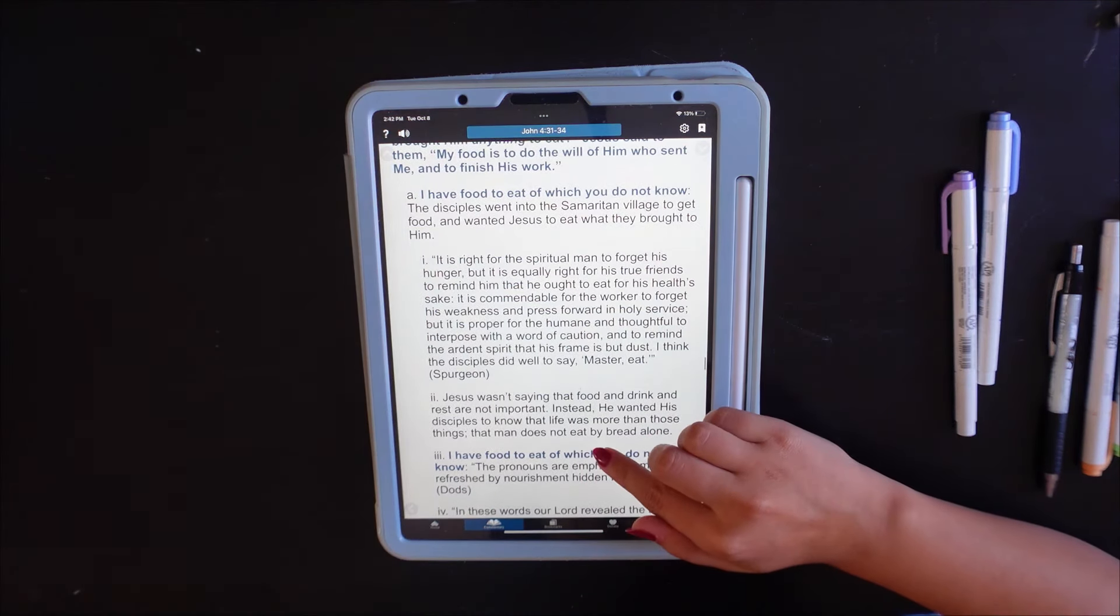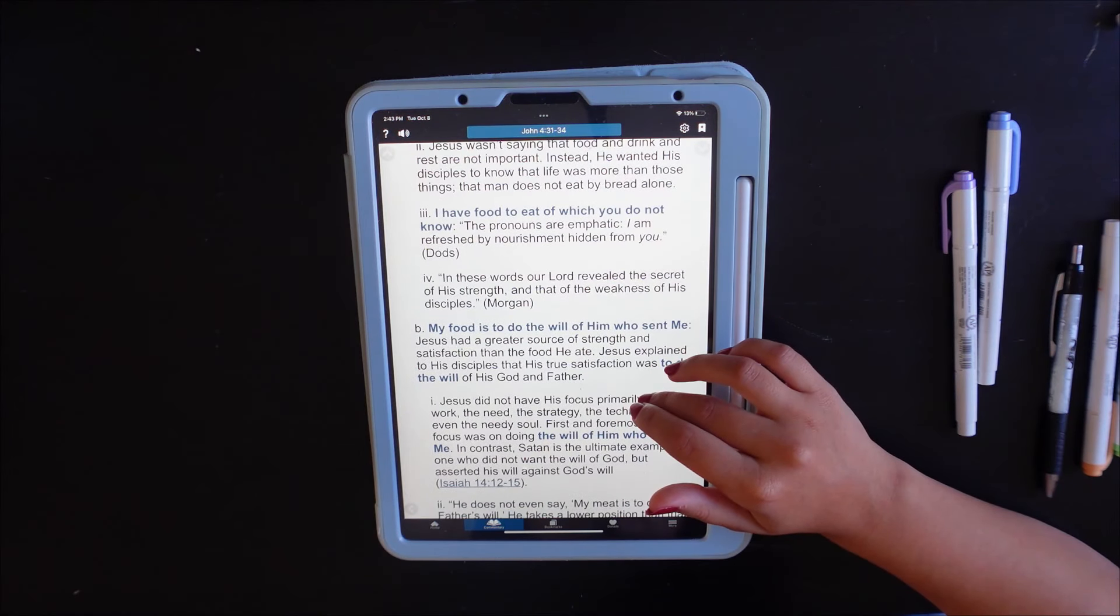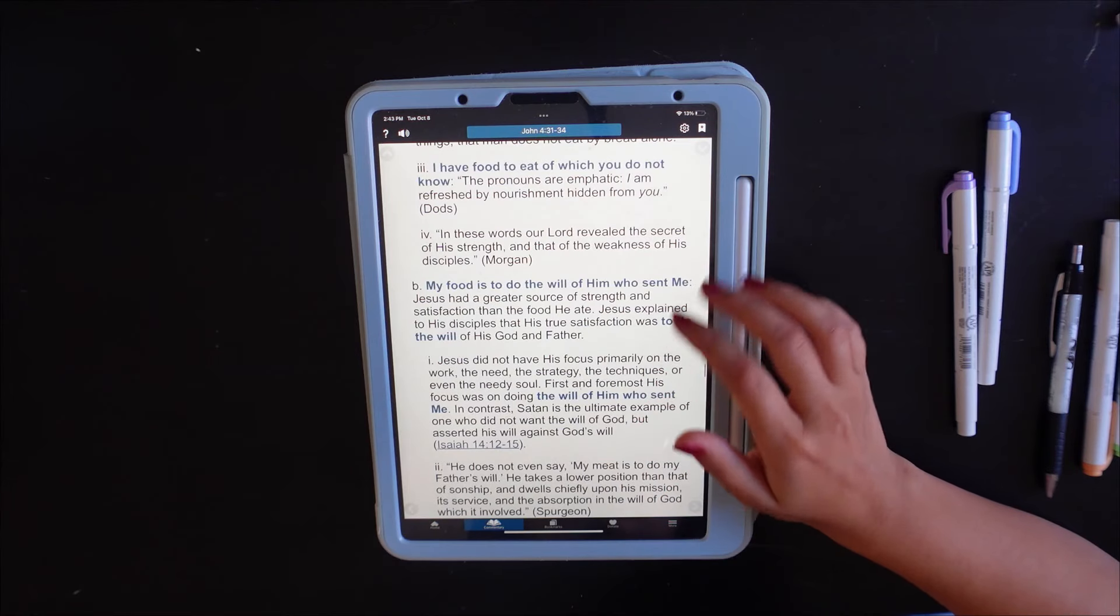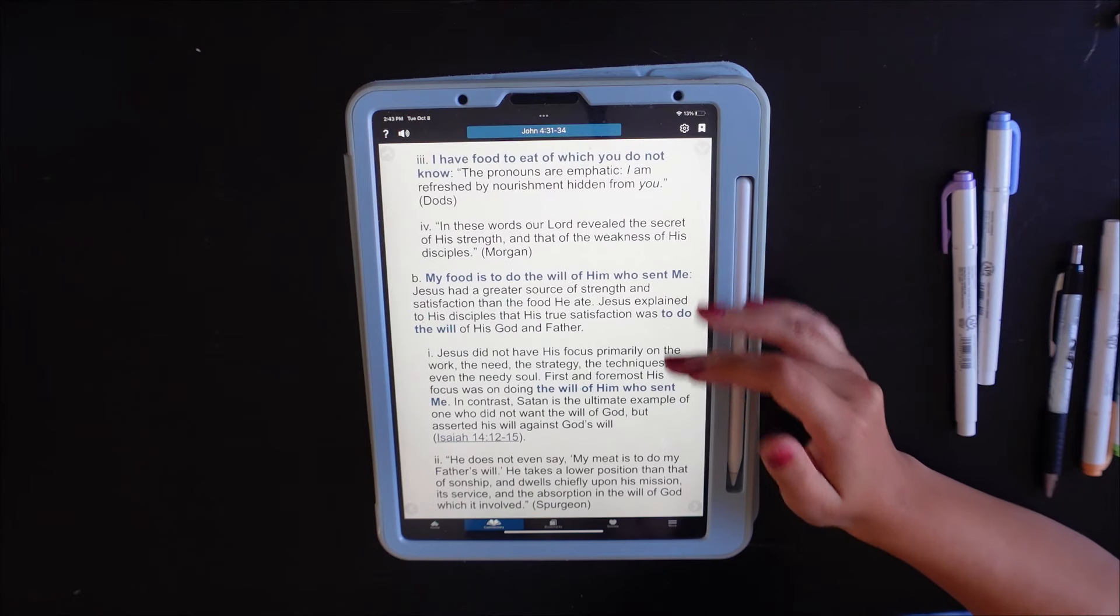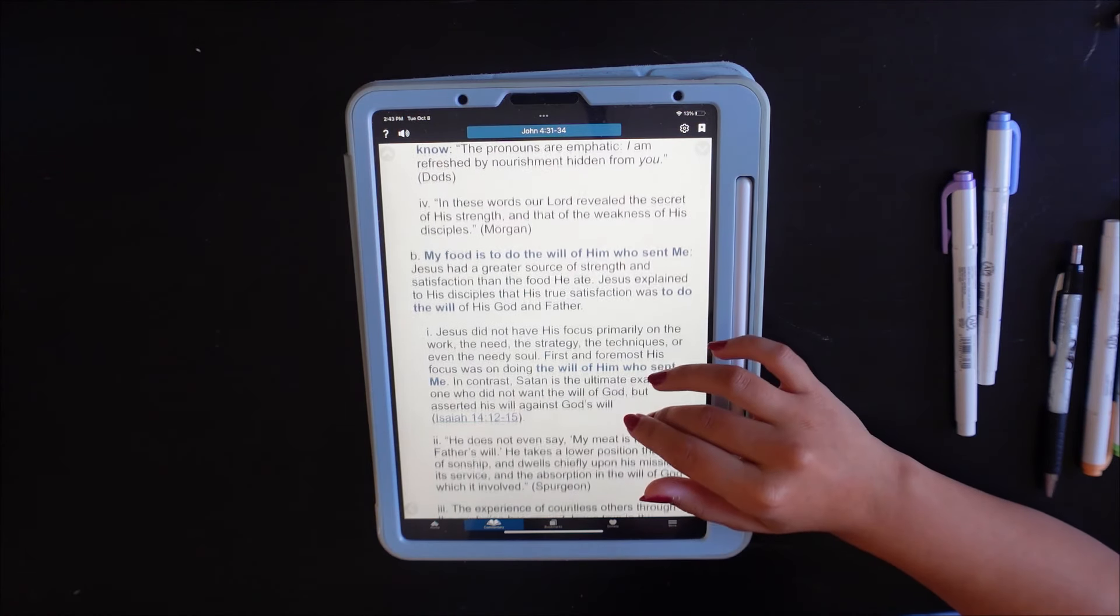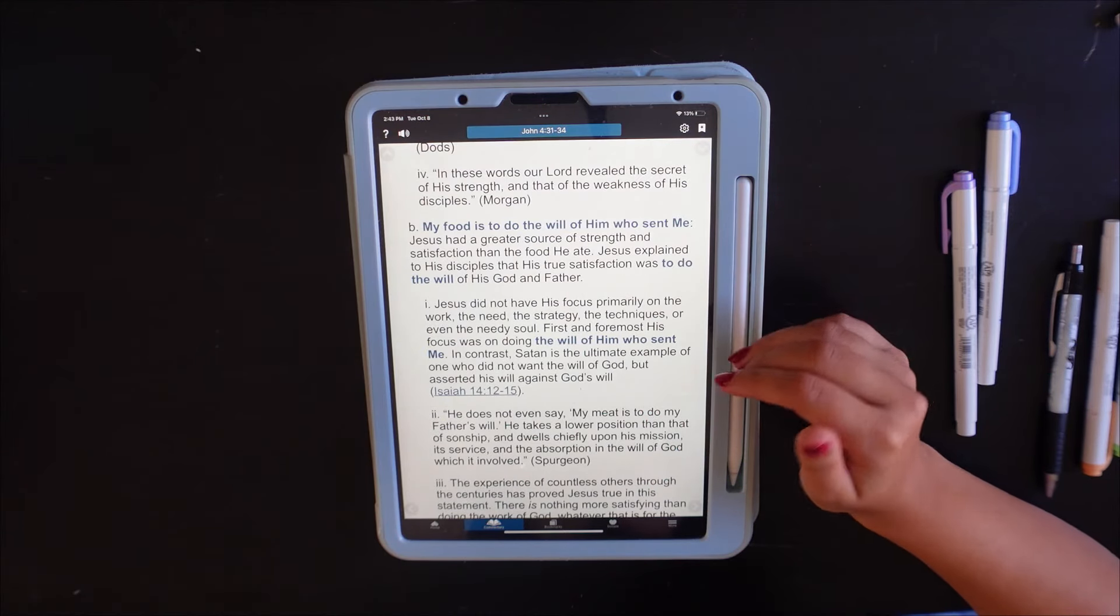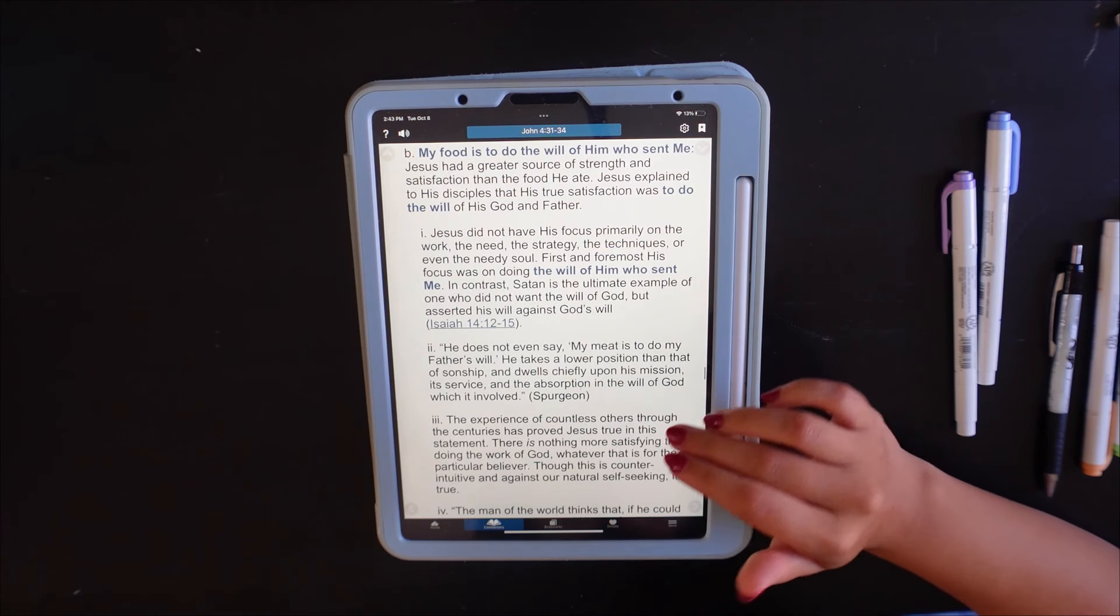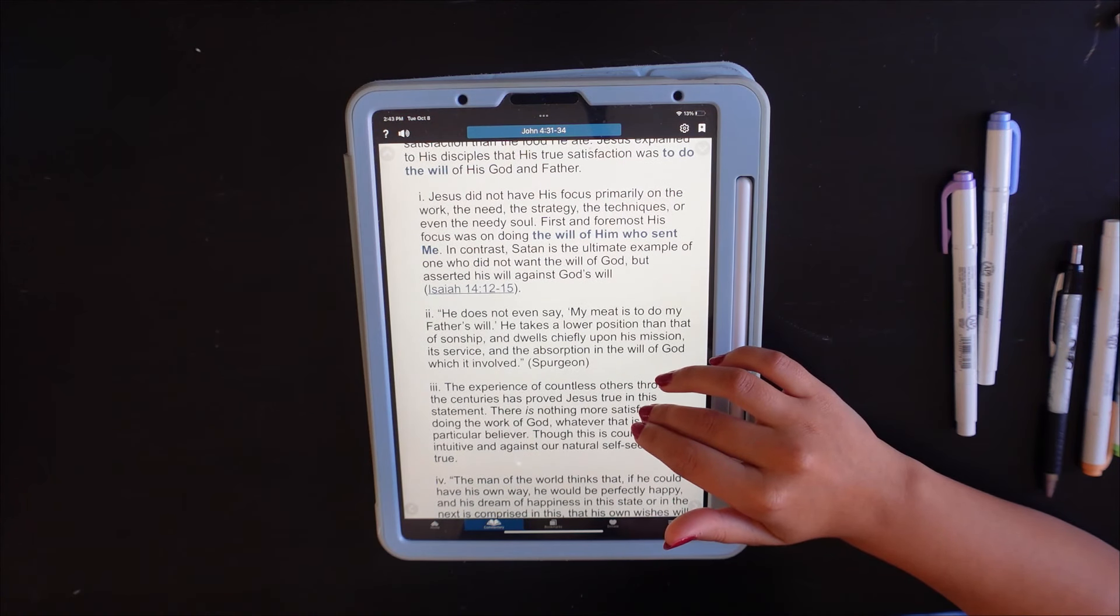I have food to eat of which you don't know. Jesus wasn't saying that food and drink and rest weren't important. Instead he wanted his disciples to know that life was more than those things that man does not eat by bread alone. The pronouns are emphatic. I am refreshed by nourishment hidden from you. I have food to eat of which you do not know. In these words our lord revealed the secret of his strength and that of the weakness of his disciples. Ooh I like that.